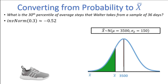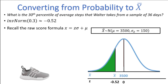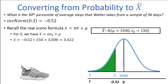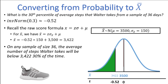Now that we have the z-score of negative 0.52 from Inverse Norm, we can include the second horizontal axis on the graph for z-scores. Now we need to convert this z-score into a value for x-bar so that the units are in steps rather than standard deviations. Recall the formula to find a raw score: x equals z times sigma plus mu. If we want to solve for x-bar instead of x, this formula is the same except we use the standard deviation of x-bar instead of the standard deviation of the initial distribution. So we have x-bar equals negative 0.52 times 150 plus 3,500, which equals 3,422. The 30th percentile for an average of 36 days of steps for Walter is 3,422, meaning that on any sample of size 36, the average number of steps Walter will take will be below 3,422 thirty percent of the time.